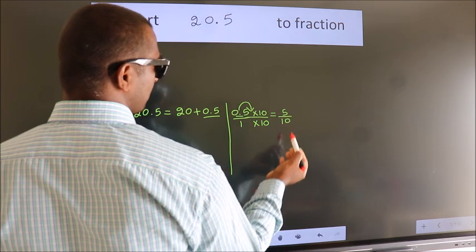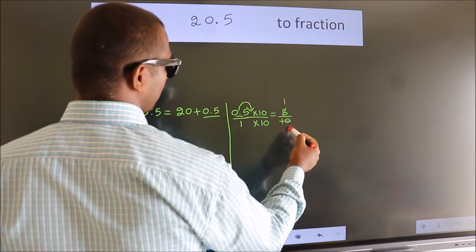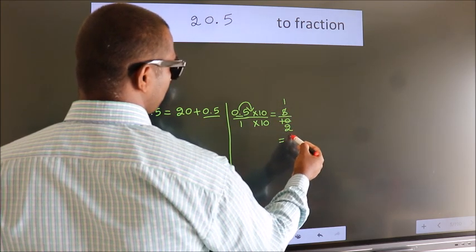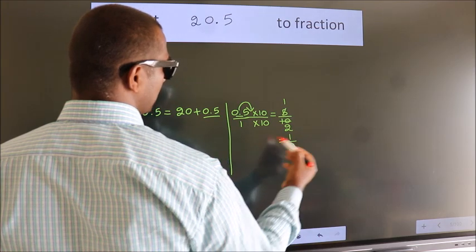Now I cancel with 5. 5 goes into 5 once, 5 goes into 10 twice. So the fraction we got is 1 by 2.